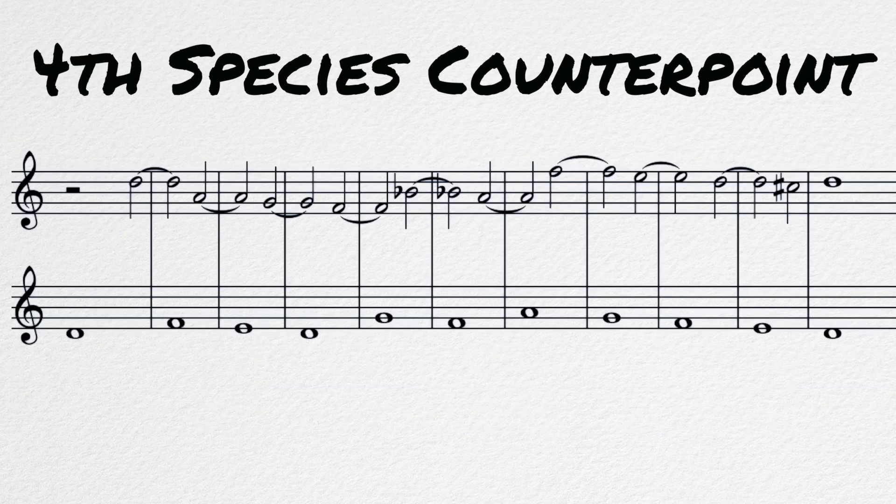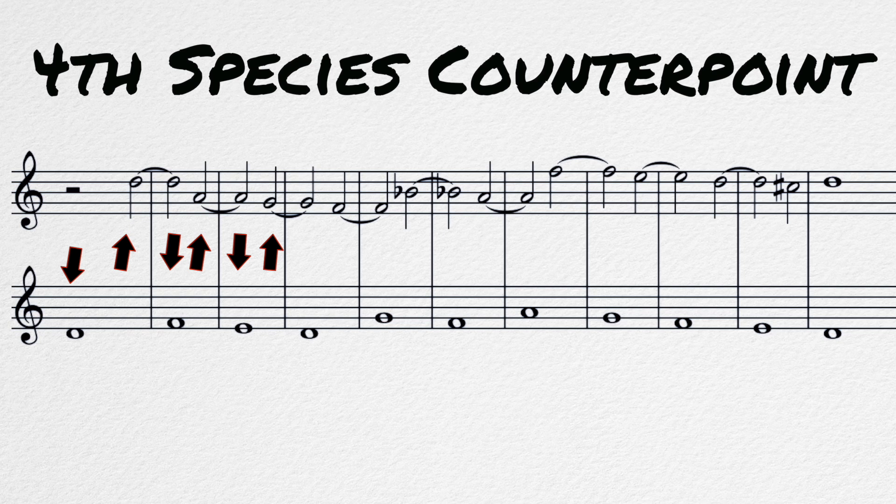Fourth species counterpoint. The fourth species is based on the art of suspensions. The voices always sound on opposite beats. The bass voice is on the down beats and the upper voice is on the up beats. When writing the note on the second beat, it must be consonant to the cantus firmus.